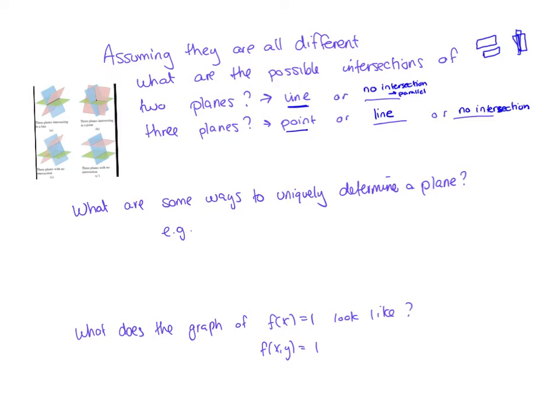In order to get a single point of intersection, I basically want to have my two planes each intersecting in their own line of intersection. Then the point where those two lines come together will give me that single point of intersection. If each pair intersects along the same line, then my intersection could be just that single line. And then I can get no intersection in lots of different ways — I could have each pair intersect in a single line, but none of them share the same line.